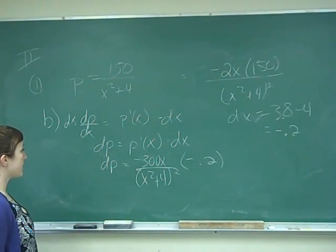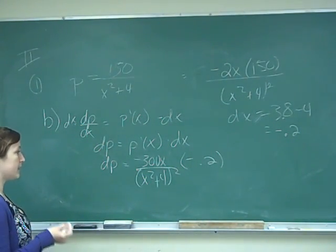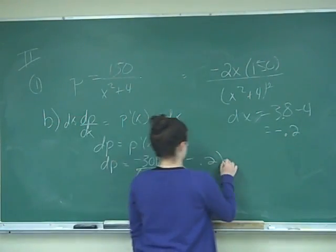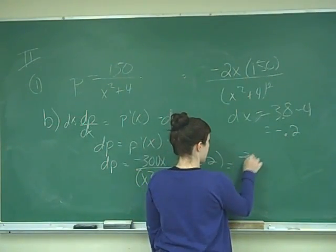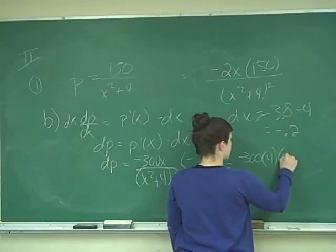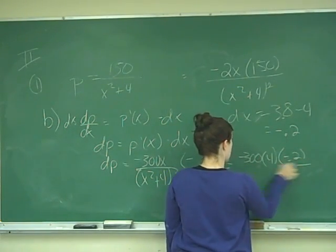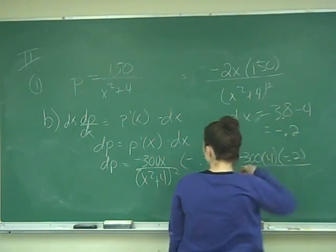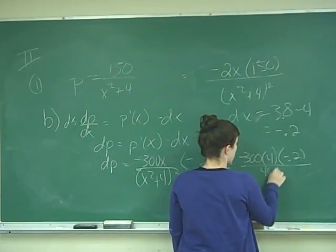The value that you plug in is your original value. So we're plugging in 4 for X. That gives us negative 300 times 4, times negative 0.2, all over—remember, 4 squared is 16, plus 4 is 20, squared will be 400.